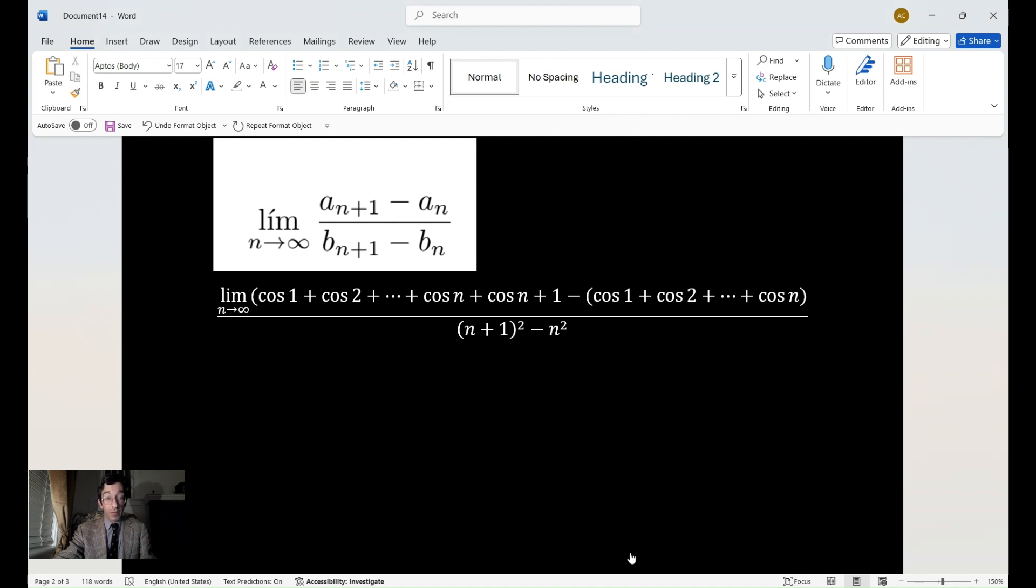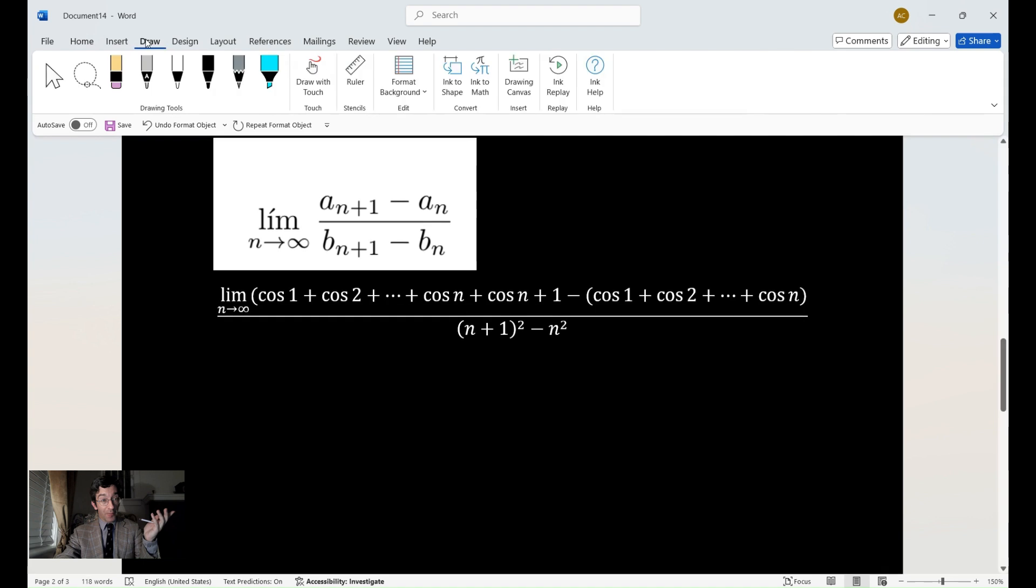So hopefully it looks a lot neater this way so that you can all see. So if we apply the theorem, now it's just a question of plugging everything into the theorem that we have from the information we have, and we just combine the like terms. We have cosine of 1 minus cosine of 1, so that vanishes. We have cosine of 2 minus cosine of 2, that vanishes. We have cosine of n minus cosine of n, that vanishes.